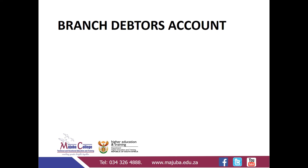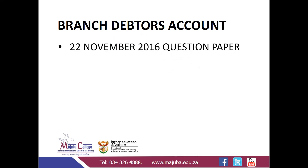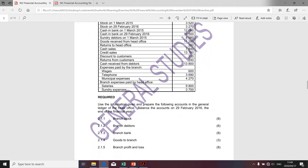I'd like us to tackle the preparation of a branch debtors account. In part 2.1.1, I dealt with the preparation of branch stock account. We looked at the question paper written on the 22nd of November 2016. Requirement 2.1.2 of that question paper specifically required candidates to prepare the general ledger of head office relating to branch debtors. I'd like to refer to the preparation of the general ledger as the T-account.